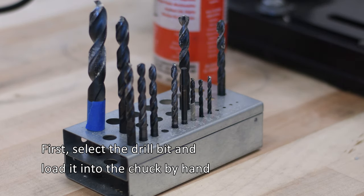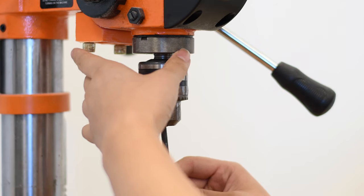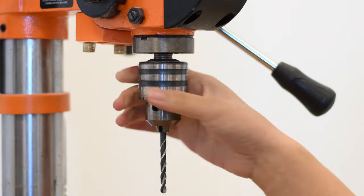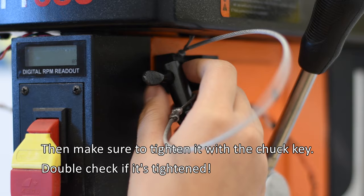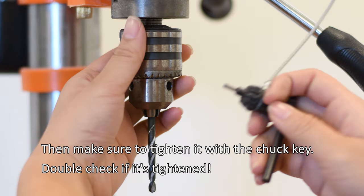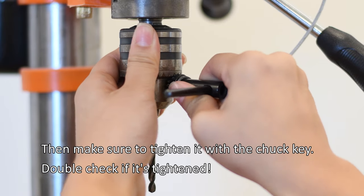First, select your drill bit and load it into the chuck by hand. Then, make sure to tighten with the chuck key. Double check that it's tight.